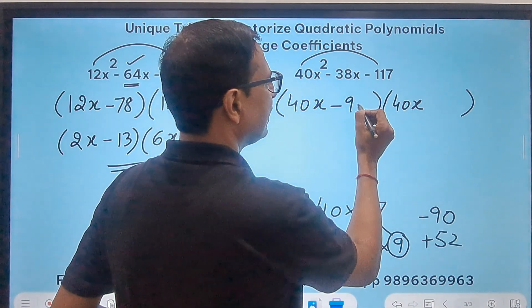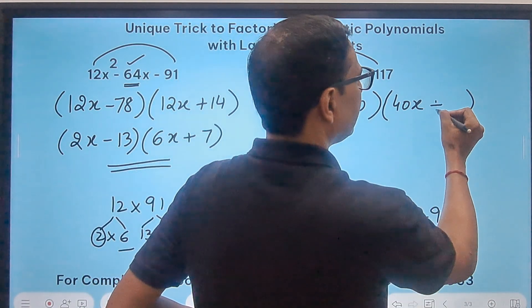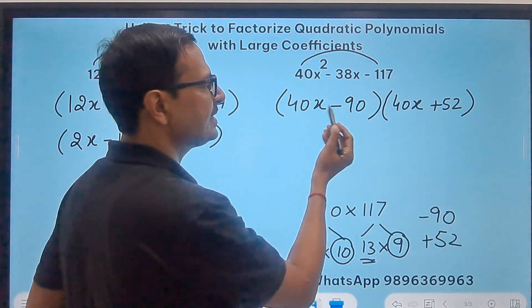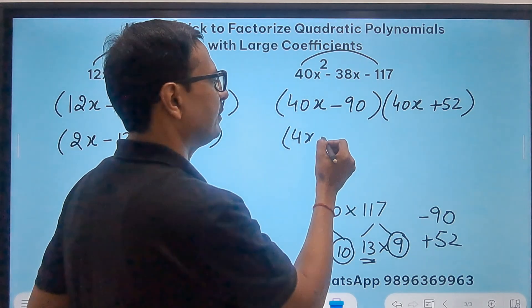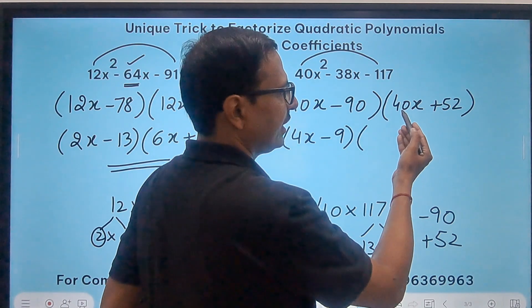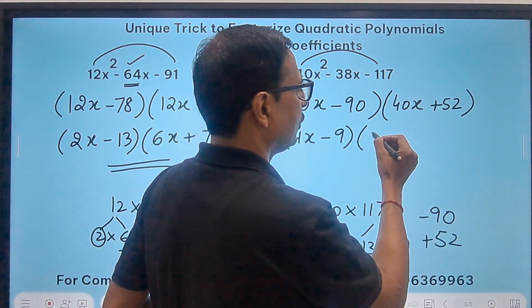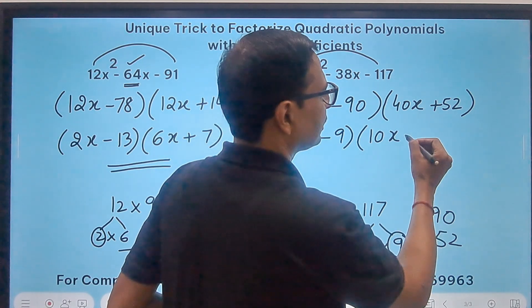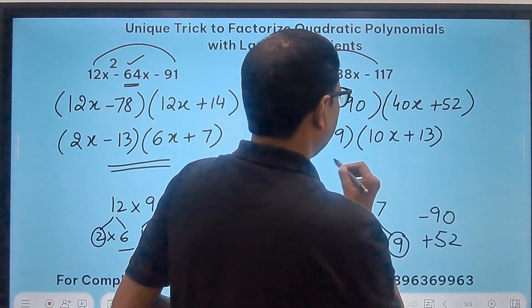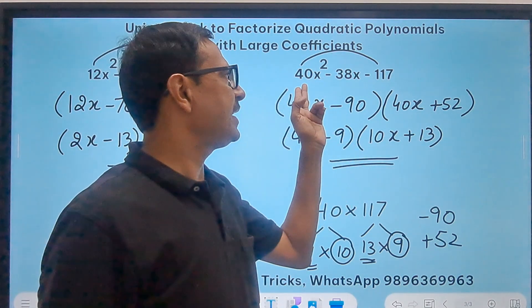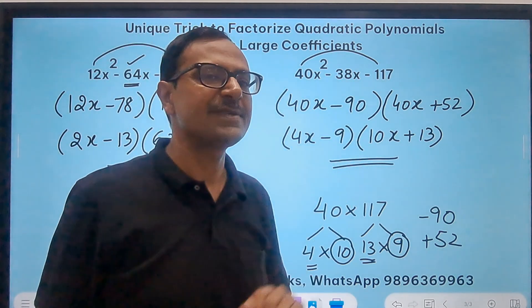So write negative 90 and positive 52 in the two brackets and remove the highest common factor. 10 is the common factor here. So this becomes 4x minus 9, and what is the common factor here? I think they are divisible by 4. So 4 times 10x and 4 times 13. So plus 13, and that is the factorization of 40x square minus 38x minus 117.